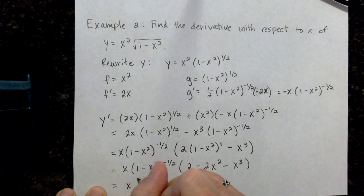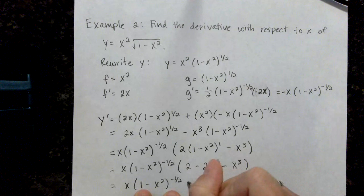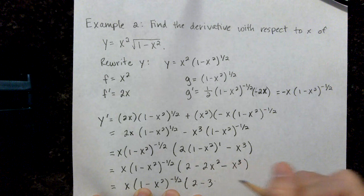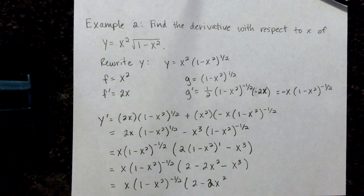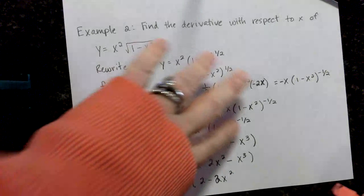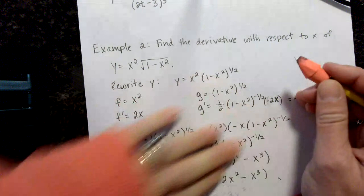So now again, this becomes x times 1 minus x squared to the negative 1 half times 2 minus 2x squared. I should have seen there. Sorry, I'm making you guys do too much work. This can't be simplified any further. So let me erase real quick. Sorry about that.